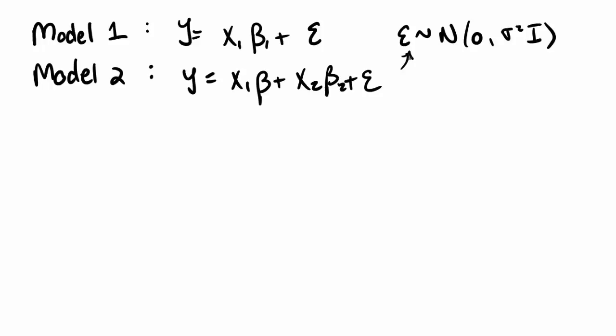So we're only considering one kind of potential model specification where, if we fit model 1 and model 2 is true, we have underfit the model. We've omitted covariates that we should have included, namely the x2 covariates.